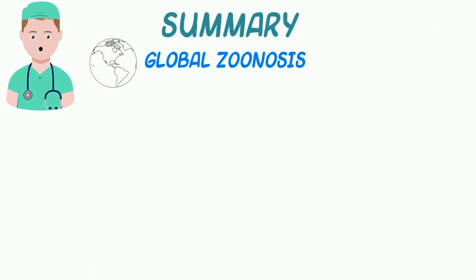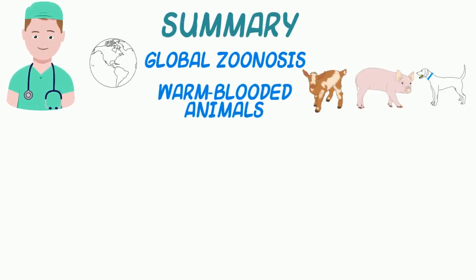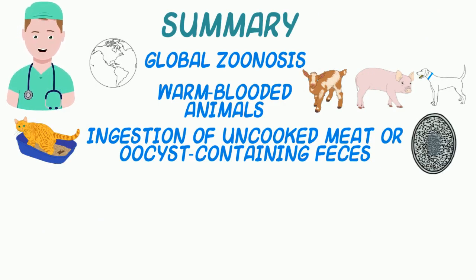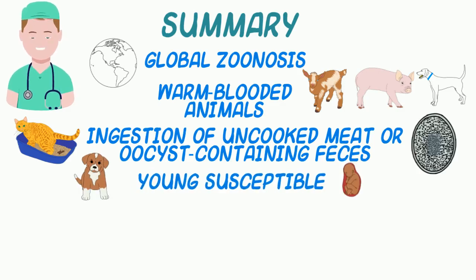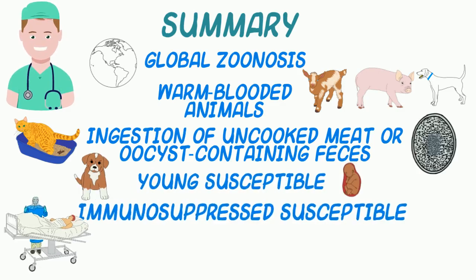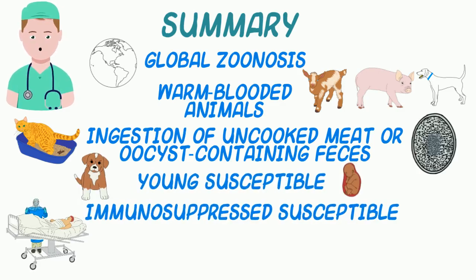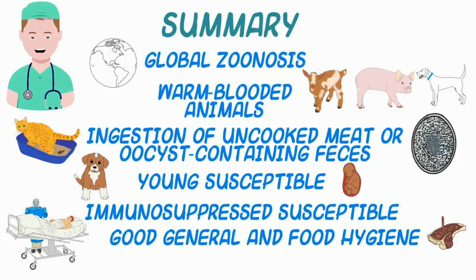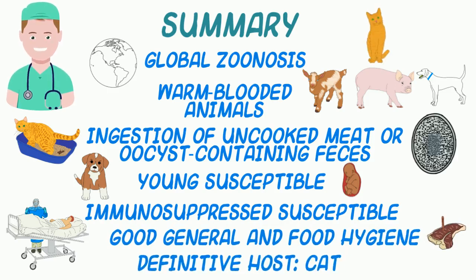Toxoplasmosis is a zoonotic disease that can occur in all warm-blooded animals and is spread through ingestion of uncooked meat or through fecal contamination containing oocysts. The young, developing animals or persons, and those who are immunosuppressed are at the greatest risk. Prevention is generally addressed by good general and food hygiene, particularly around the presence of the definitive host, the cat.